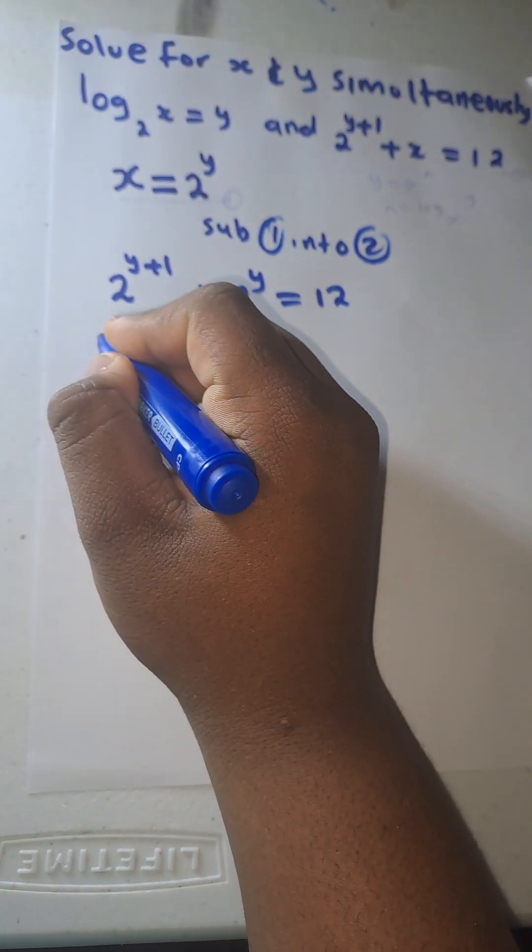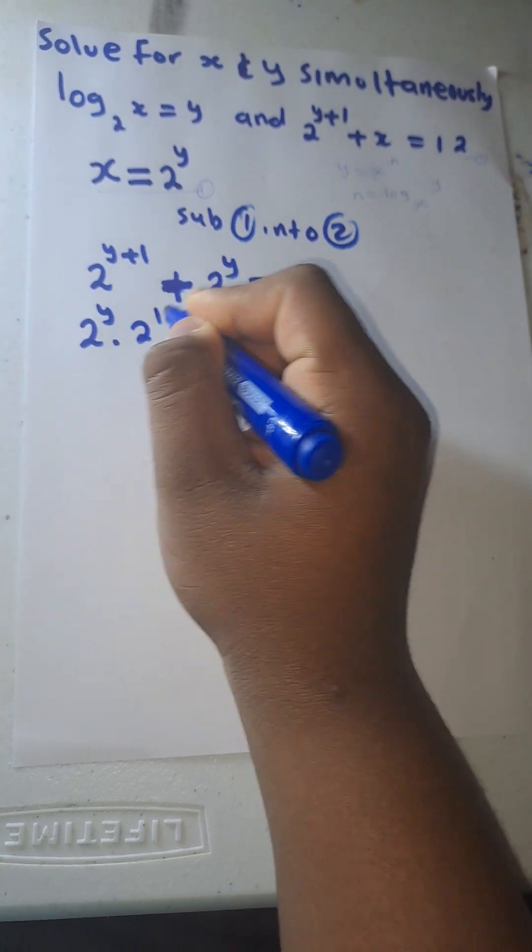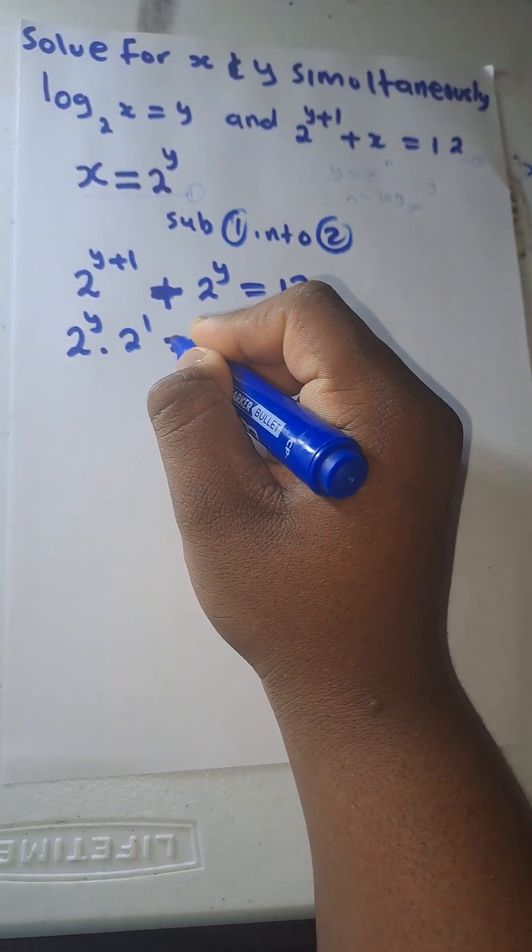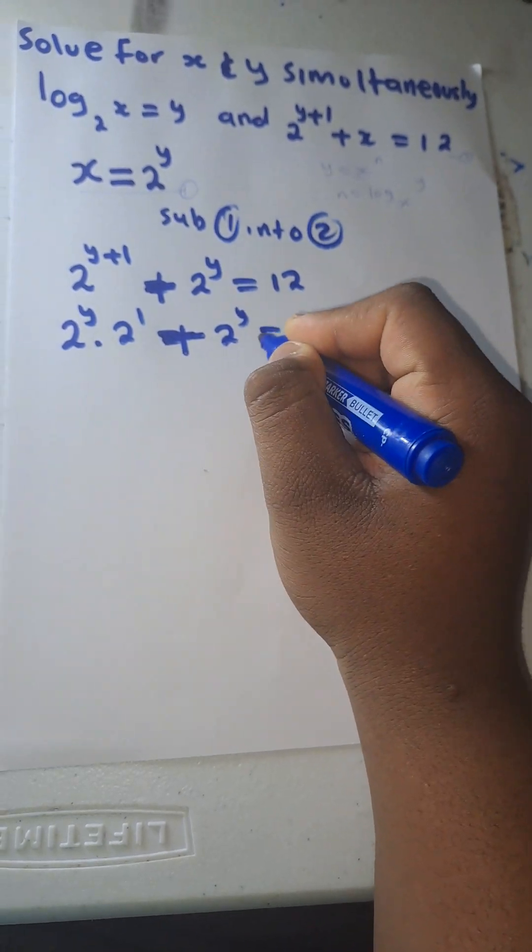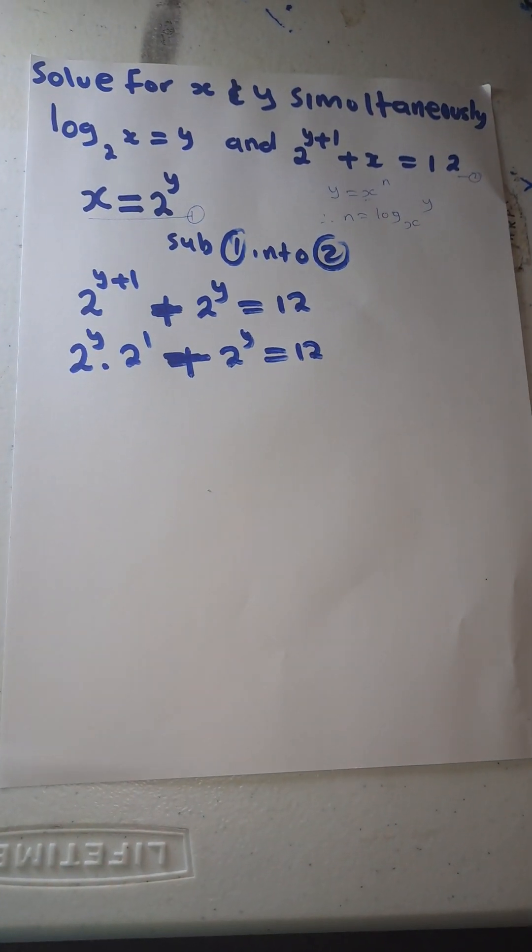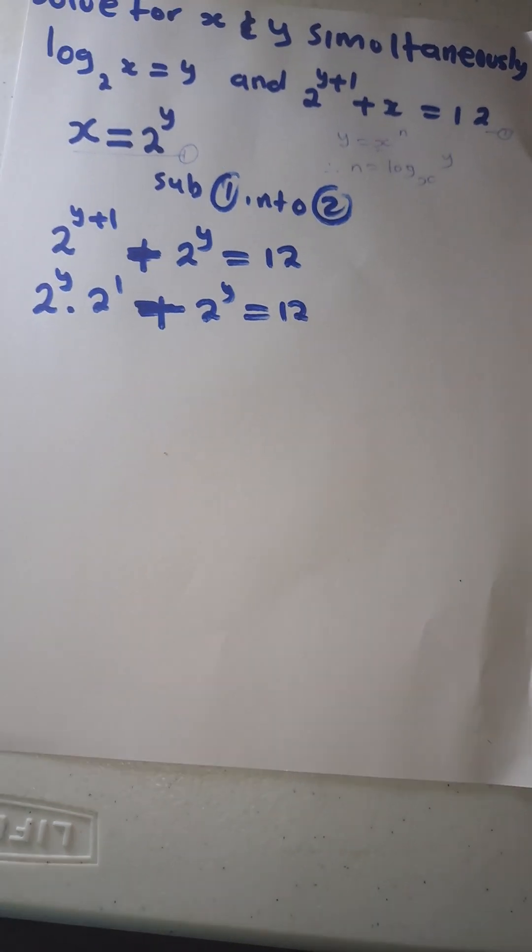2 to the power y times 2 to the power 1 plus 2 to the power y equals to 12. Is it fine? So now when it is like this, you are going to check what is common there on the equation.